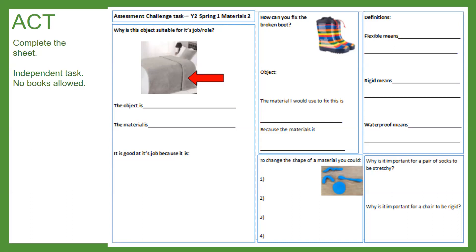In the fifth and final box, in the bottom right-hand corner, you will read this question: why is it important for a pair of socks to be stretchy? Think about why socks need to be stretchy and what would happen if they weren't. Then answer this question: why is it important for a chair to be rigid? Hopefully knowing the definition of rigid will help you answer that last question.